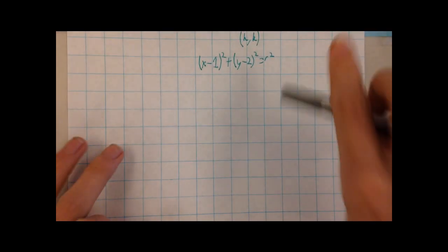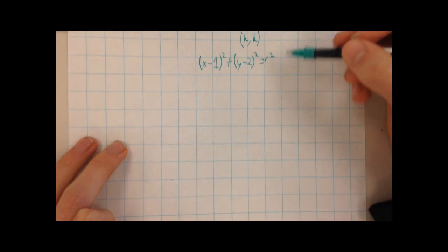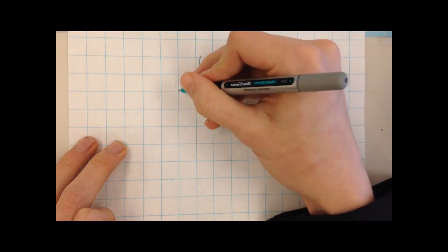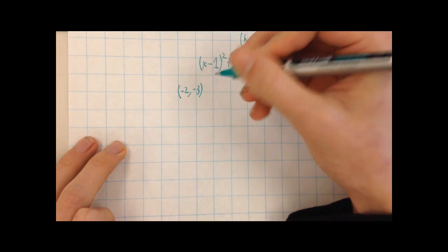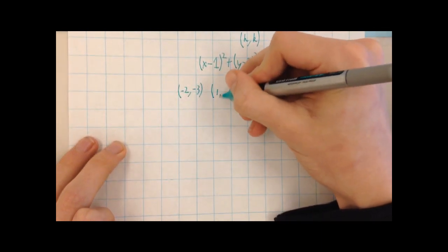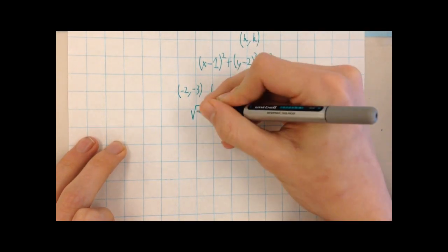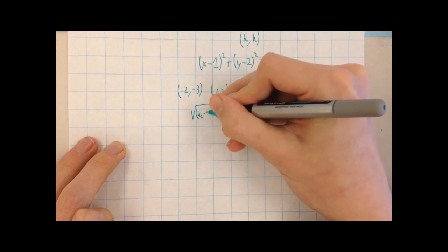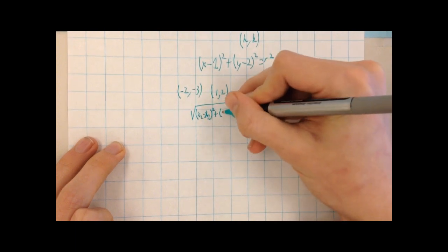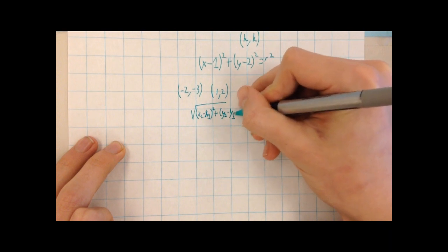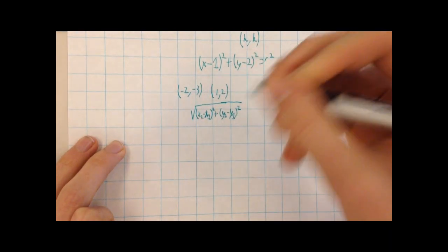Now we need to find the radius. We can do this by finding the distance between our midpoint and one of our endpoints. We will use the endpoint negative 2, negative 3, and our midpoint was 1, 2. The distance formula is the square root of x2 minus x1 squared plus y2 minus y1 squared.